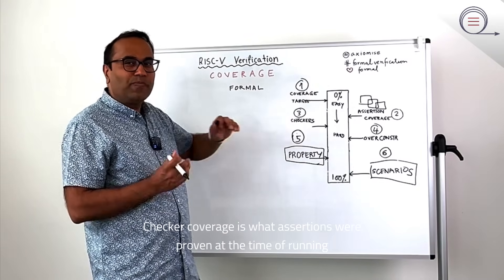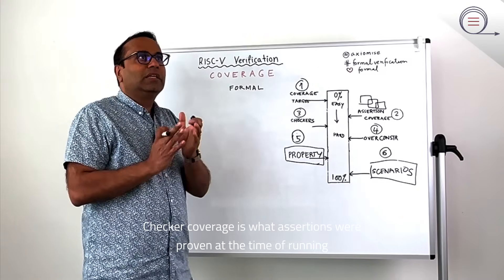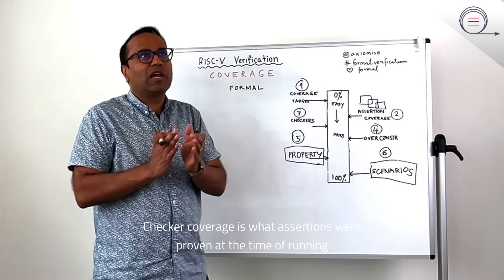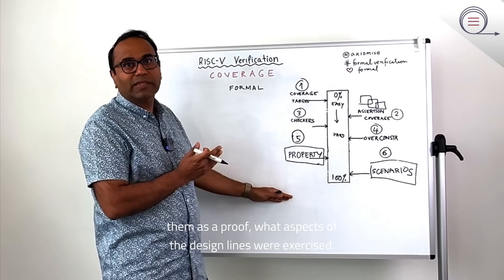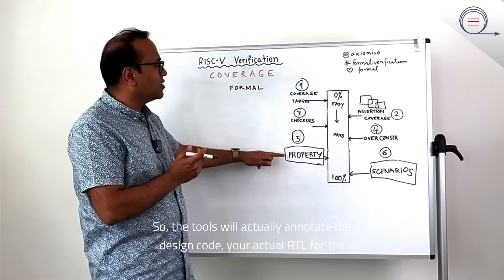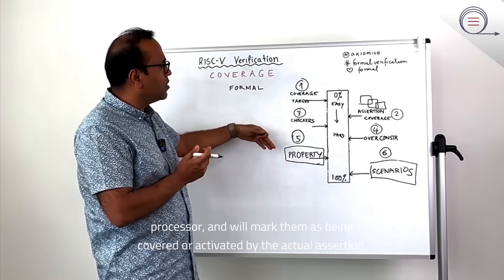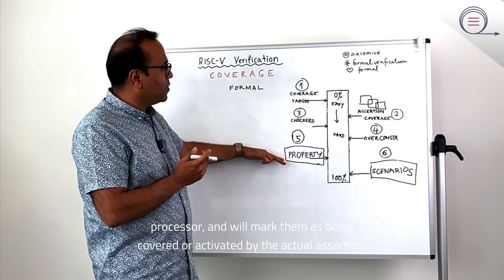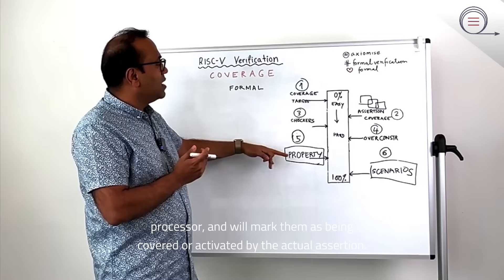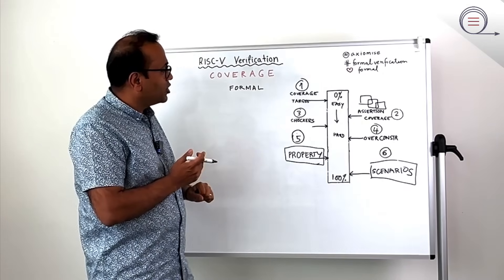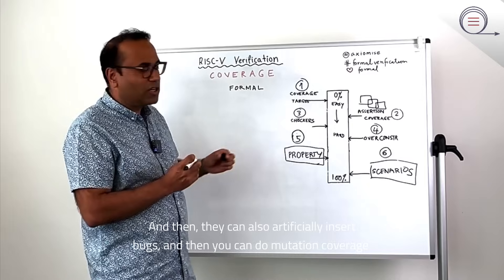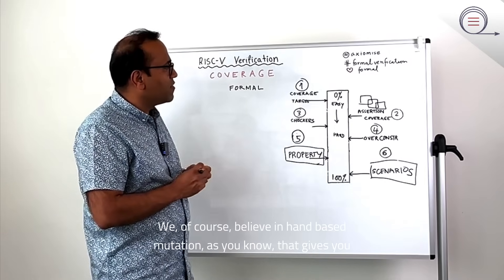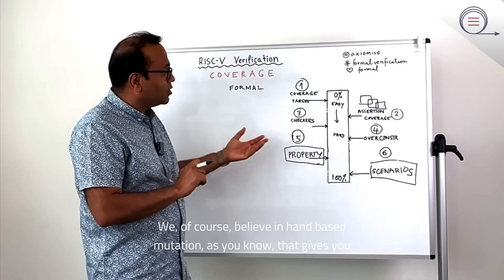Checker coverage is what assertions were proven and at the time of running them as a proof, what aspects of the design lines were exercised. The tools will actually annotate the design code, your actual RTL for the processor, and will mark them as being covered or activated by the actual assertion. And then they can also artificially insert bugs and then you can do mutation coverage. We of course believe in hand-based mutation. As you know, that gives you the highest bang for your buck.